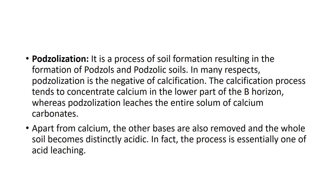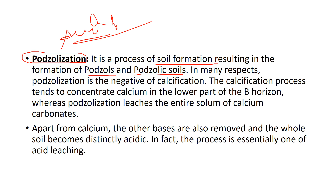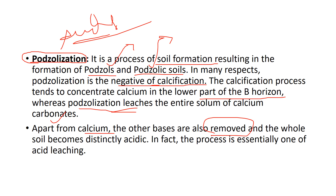The next topic is podzolization, which can also be termed acidification. It is the process of soil formation resulting in podzols and podzolic soils — essentially acidic soils. In many respects, podzolization is regarded as the negative impact of calcification. Calcification concentrates calcium in the lower B horizon, whereas podzolization leaches the calcium carbonate entirely. Apart from calcium, other bases are also removed and the whole soil becomes distinctly acidic — essentially a process of acid leaching.